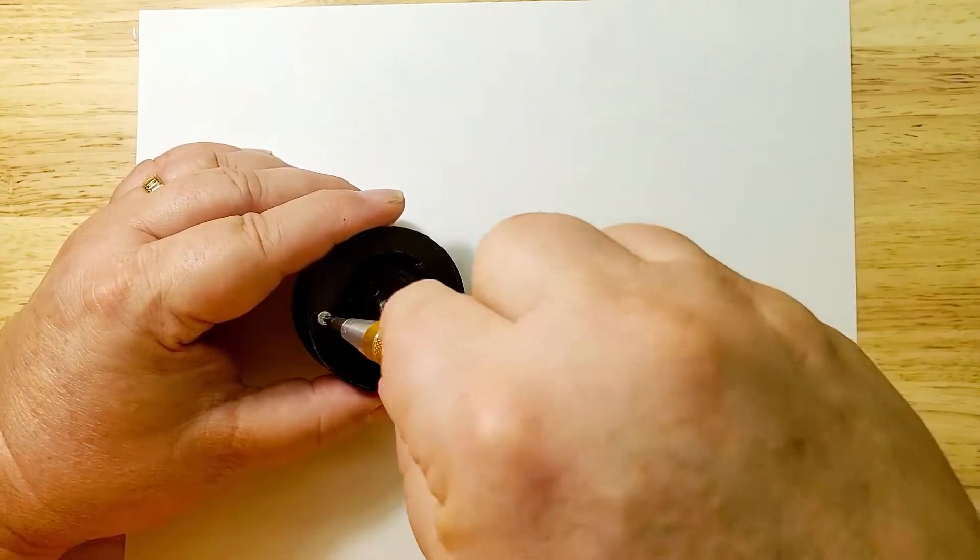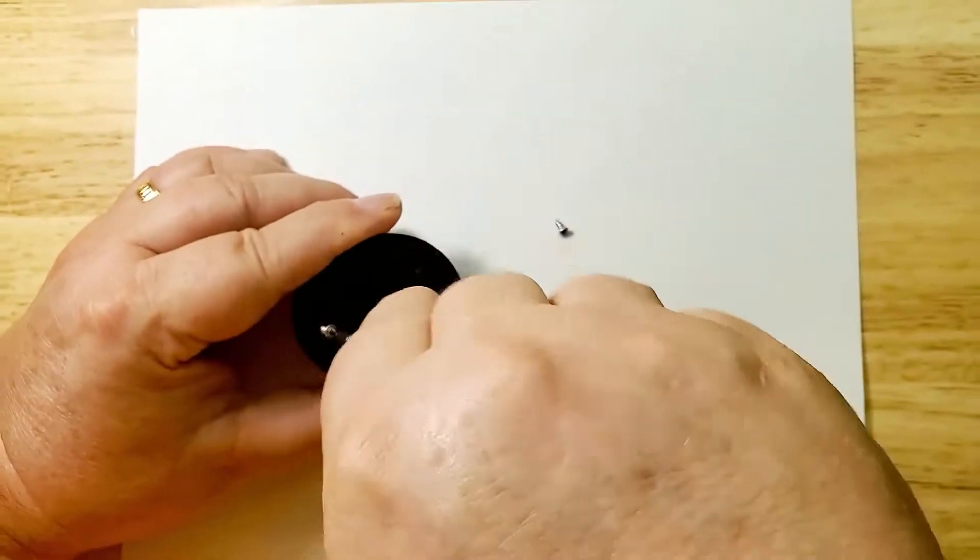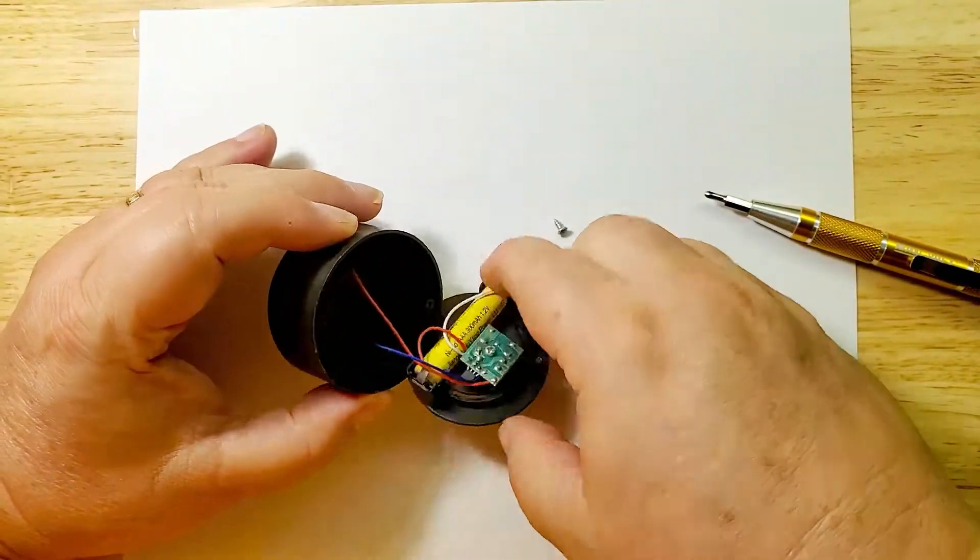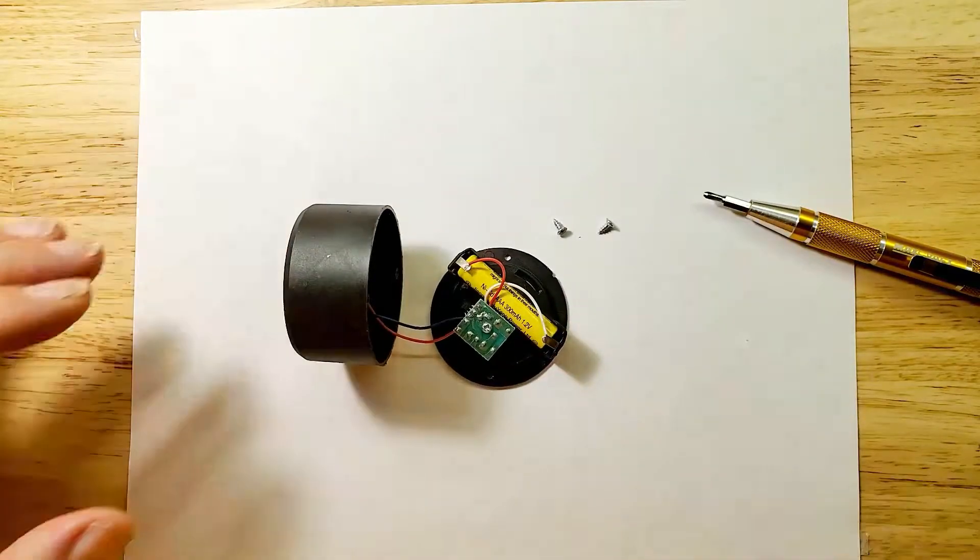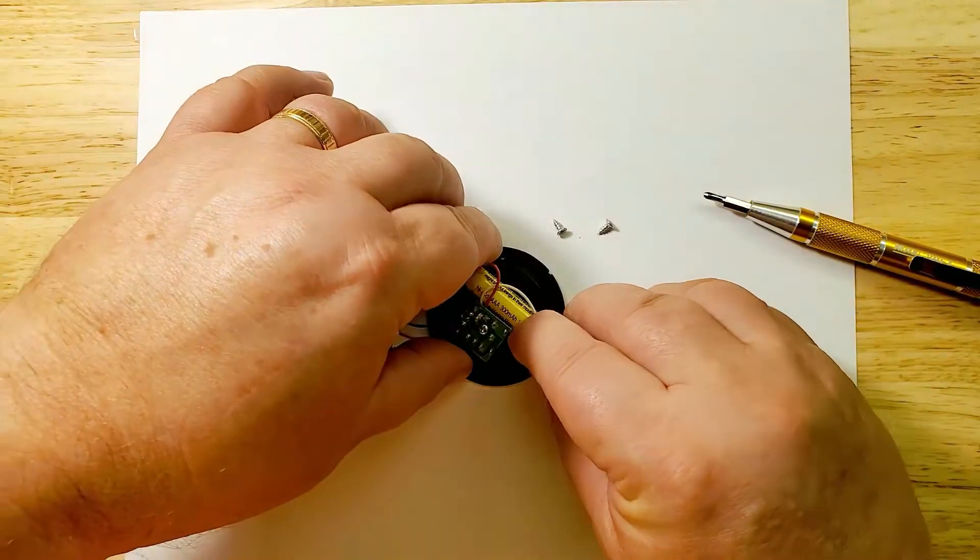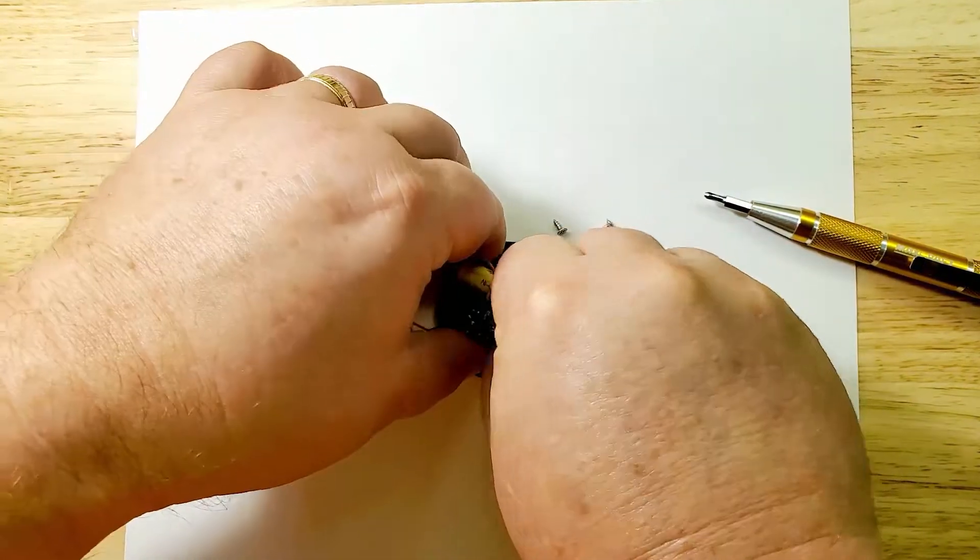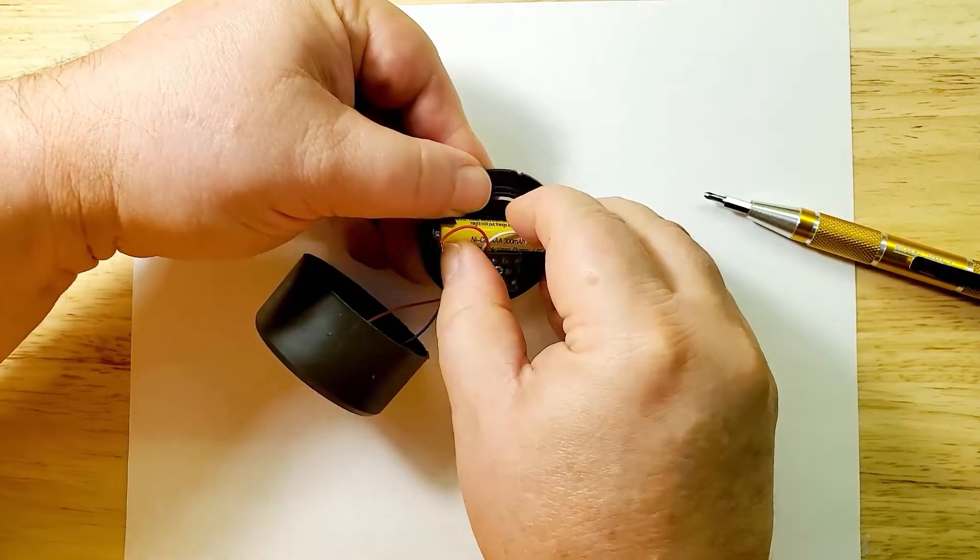They're easy to take apart. There's just two screws and there's two wires coming from the solar panel attached to the little circuit board. The battery is held in by two metal clips that are folded over. You can bend them back to get the battery out.